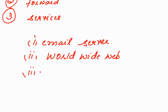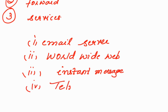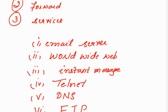If you are using WhatsApp, that is instant messaging. For remote login, you can use telnet services. Mapping a host name or domain name to an IP address is done by DNS services. For transferring files in the network, FTP services are used. Services include: email, World Wide Web, instant messaging, telnet, DNS, and FTP.